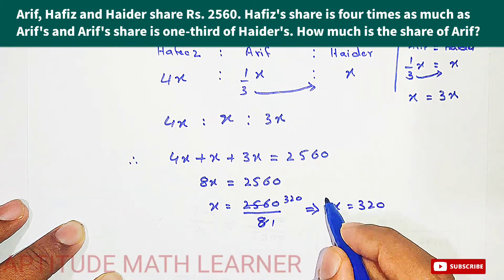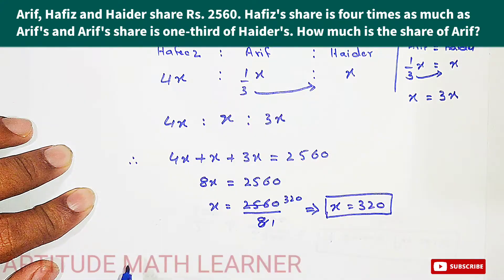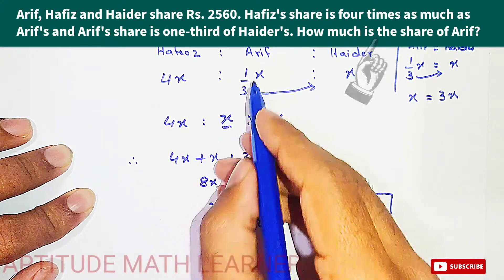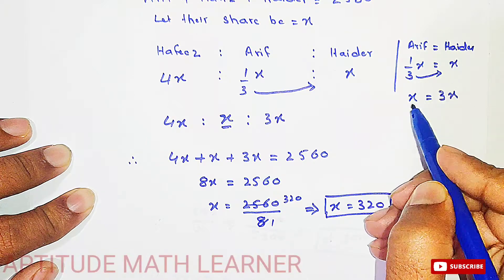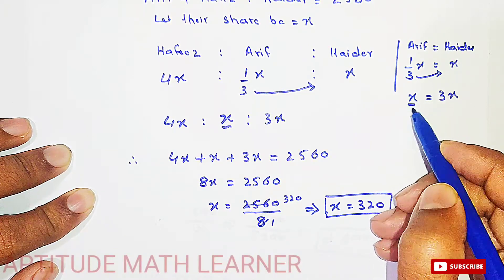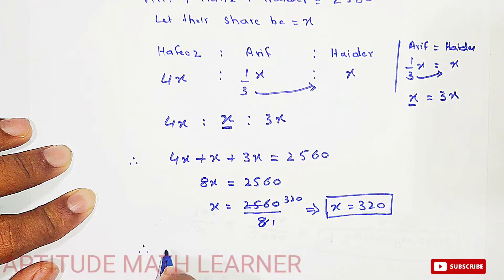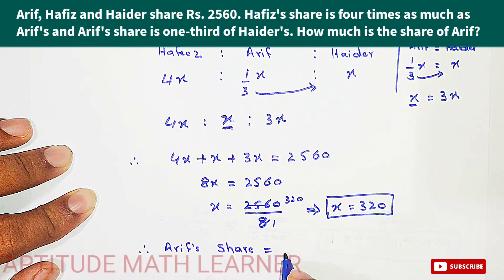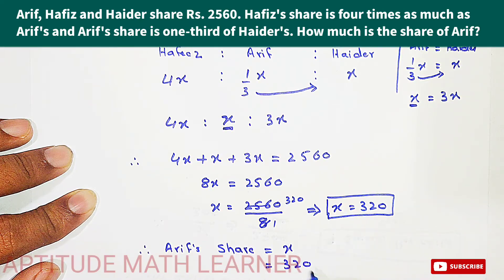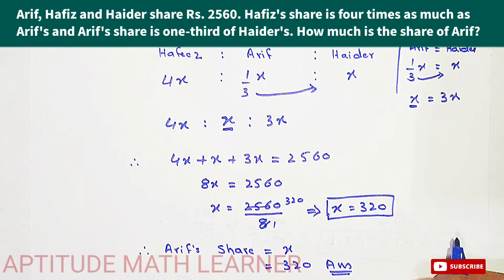The value of x is three hundred and twenty. The one-third relationship was just for our understanding, and we calculated that Hader's share equals 3x. Arif's share is only x, therefore Arif's share equals three hundred and twenty rupees. This is our answer. I hope you have understood the question completely. Thank you very much.